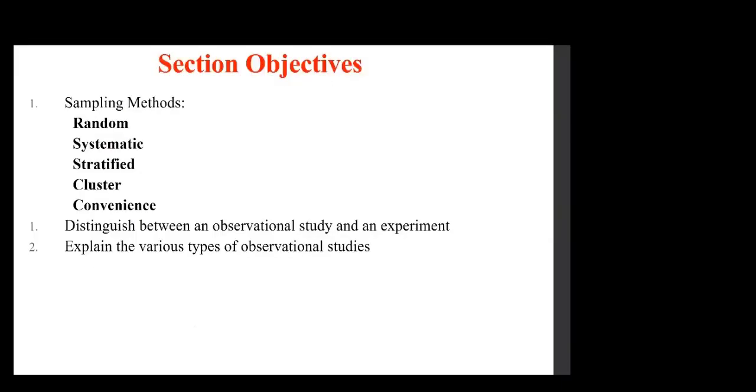And so we're going to look at sampling methods. In this section there are other things involved. The main thing that we are concerned with is the sampling method. We may quickly cover other things. We don't have to worry about it too much. So there are different methods: random, systematic, stratified, clustered, and convenient sampling. We want to distinguish between observational and... observational study and experiment.